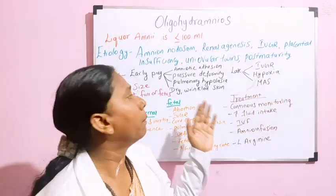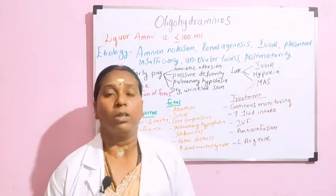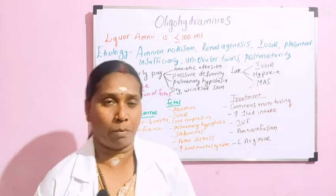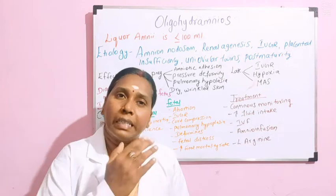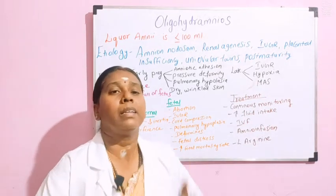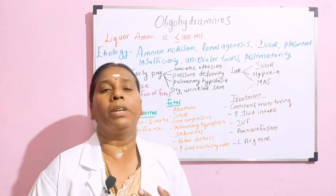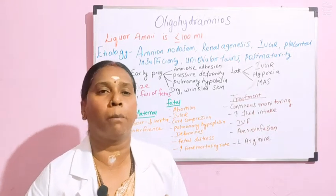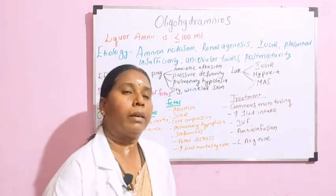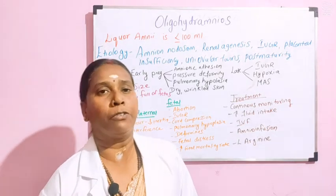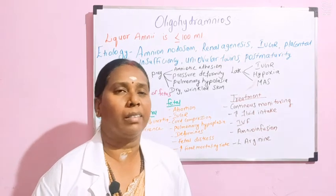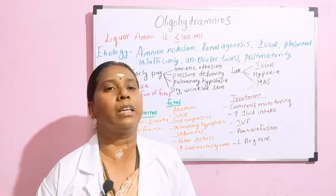The next effect is pulmonary hypoplasia. When there is decreased amniotic fluid, there is decreased circulation to the pulmonary vessels of the baby, leading to decreased lung formation — lung maturity does not take place properly. And then dry wrinkled skin: when there is no adequate fluid, it leads to dry, wrinkled, and lethargic-looking skin for the child.